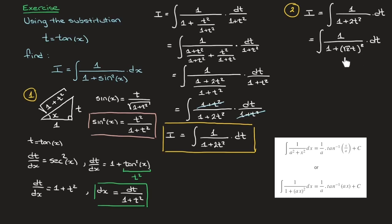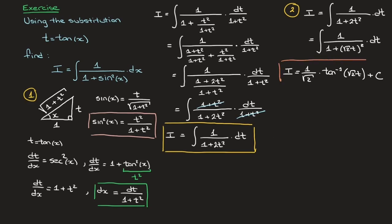Now that the denominator is written in that form, it's clear how to apply the standard result. Using it, we find that I equals 1 over the square root of 2 times the inverse tan of the square root of 2 times t, plus some constant c. That's step two done — we've integrated with respect to the new variable t.